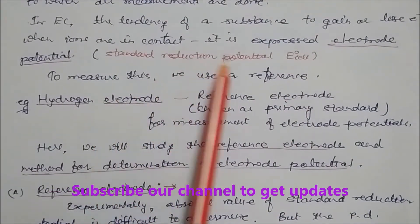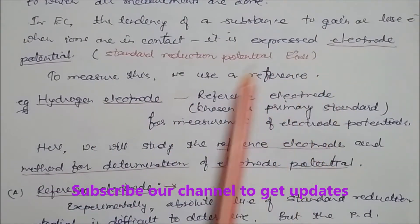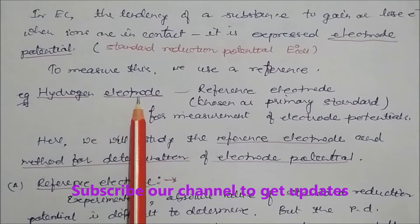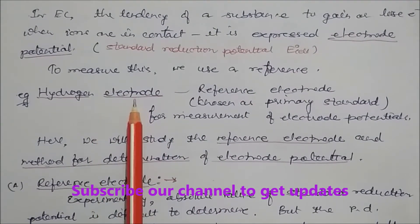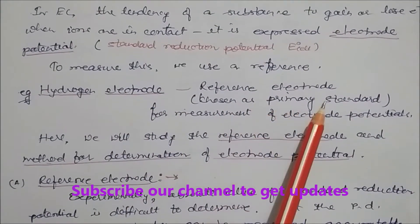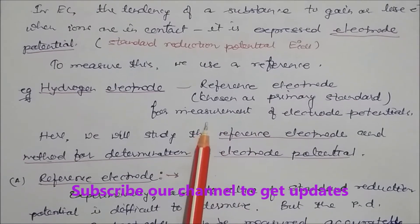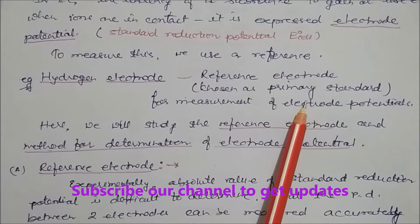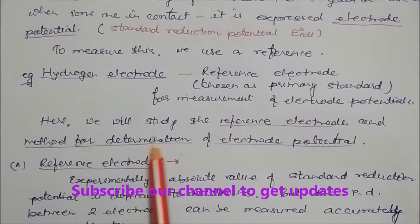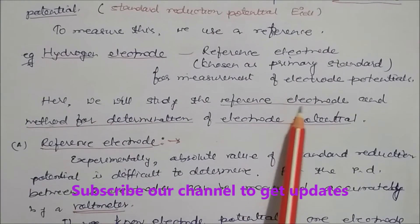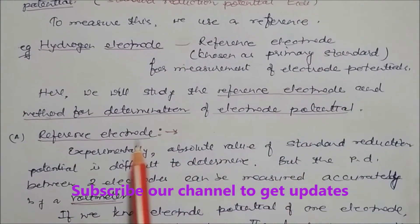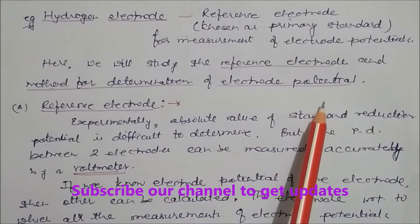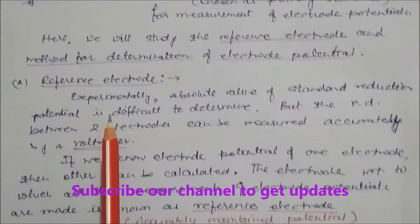To measure this reference, we use one electrode called the hydrogen electrode. The hydrogen electrode is chosen as the primary standard for measuring electrode potentials. We will study the reference electrode and how we can determine electrode potentials.